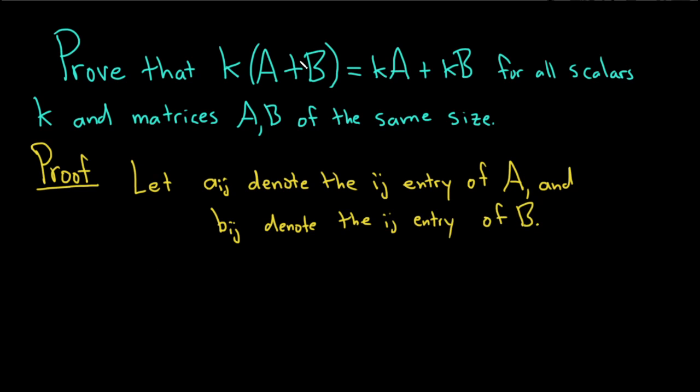Now let's look at the left-hand side. Then the ij entry of the matrix A plus B is the ij entry of A plus the ij entry of B. So that'll be the ij entry of A plus B.